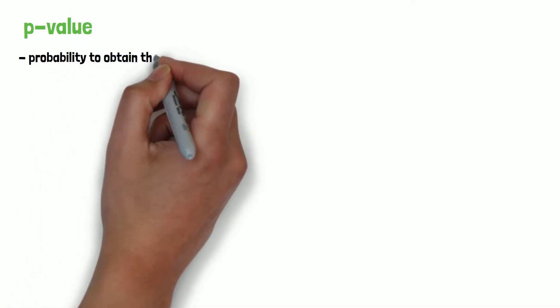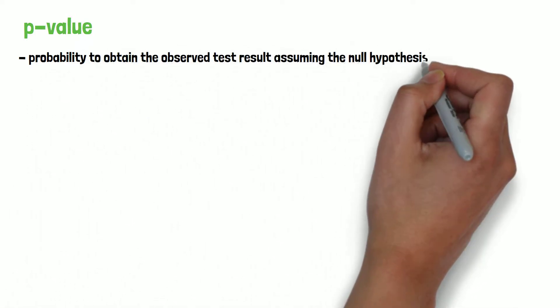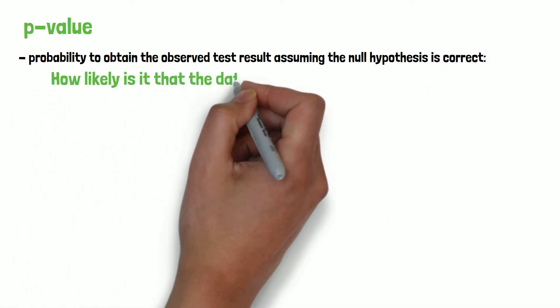P-values show how large the probability is to obtain the observed test results assuming the null hypothesis is correct, or in other words how likely it is that the data would have occurred by chance.